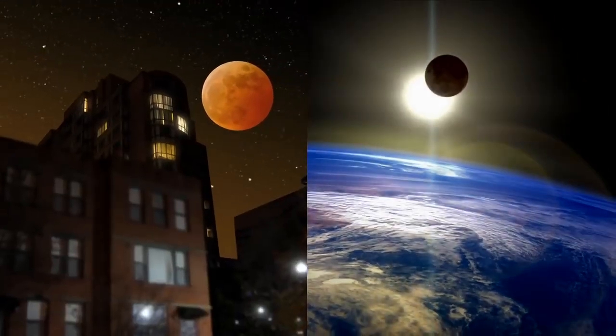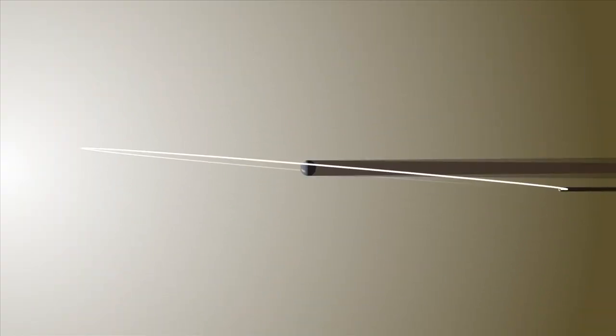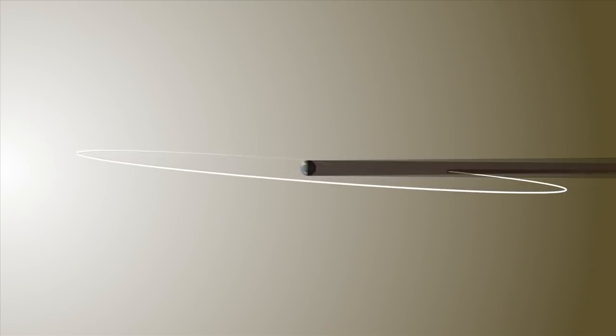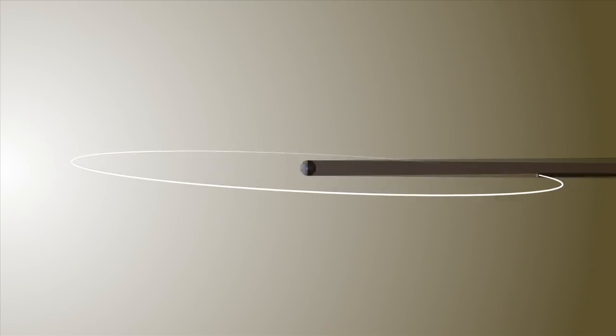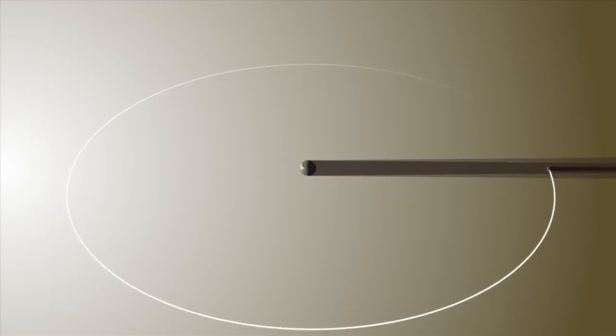But if that's the case, why do eclipses happen at all? Throughout the year, the moon's orbital tilt remains fixed with respect to the stars, meaning that it changes with respect to the Sun. About twice a year, this puts the moon in just the right position to pass through the Earth's shadow, causing a lunar eclipse.